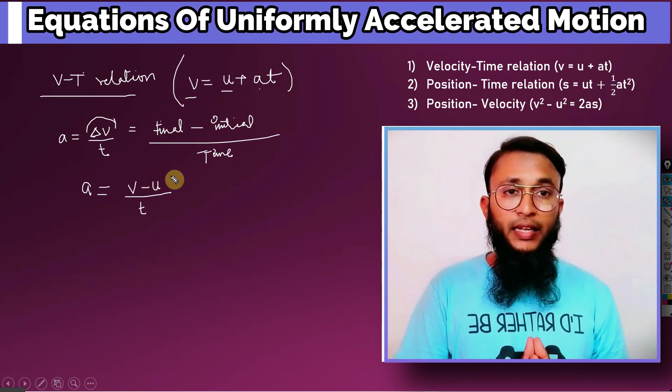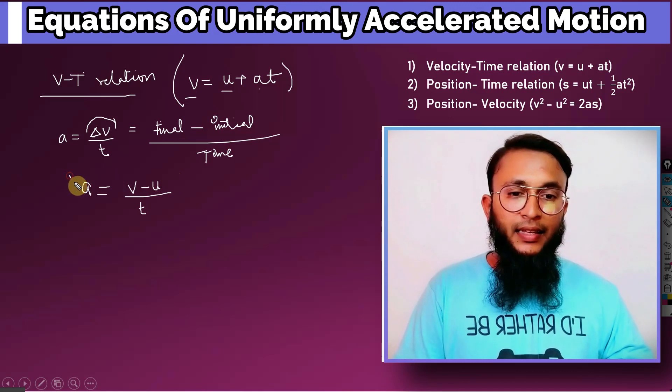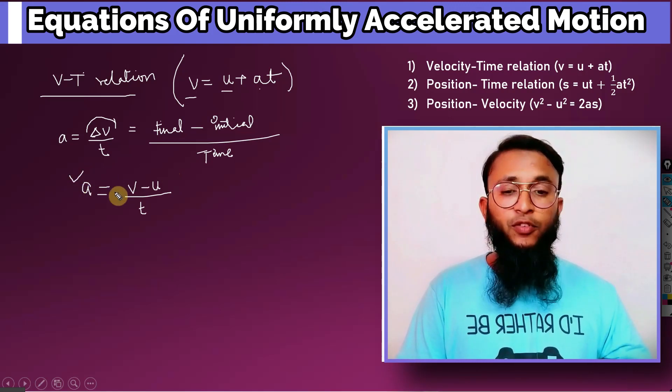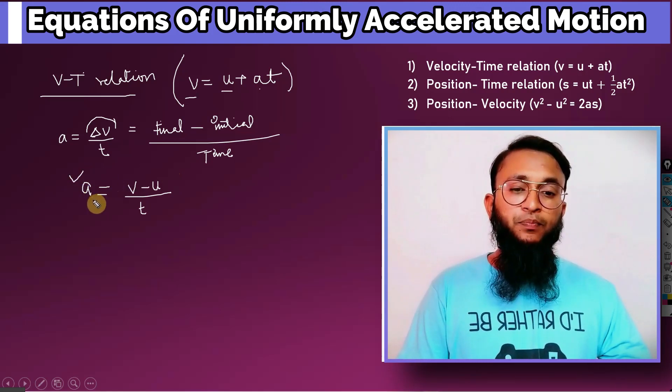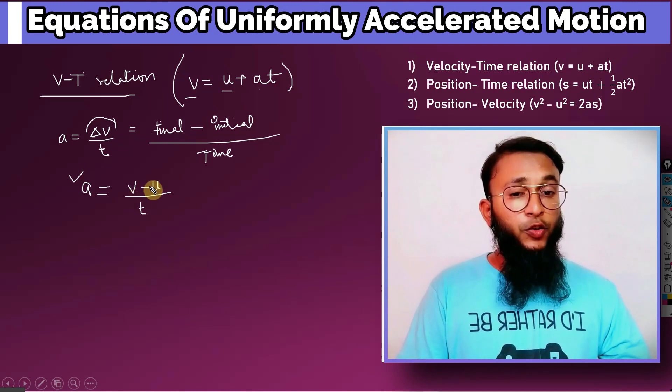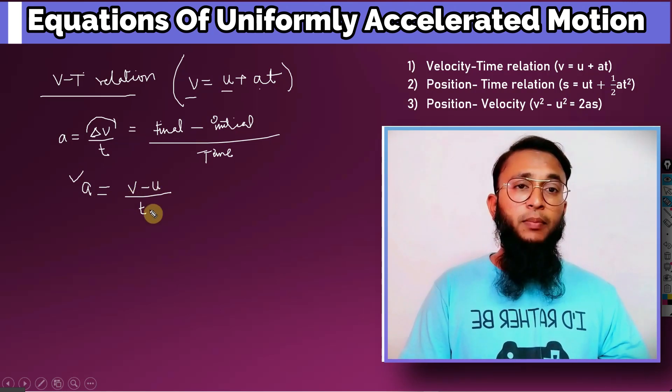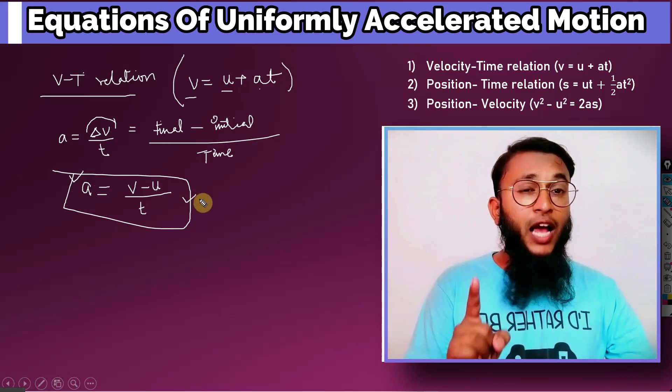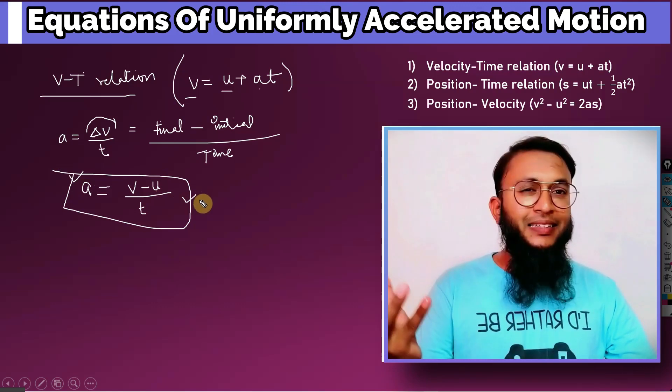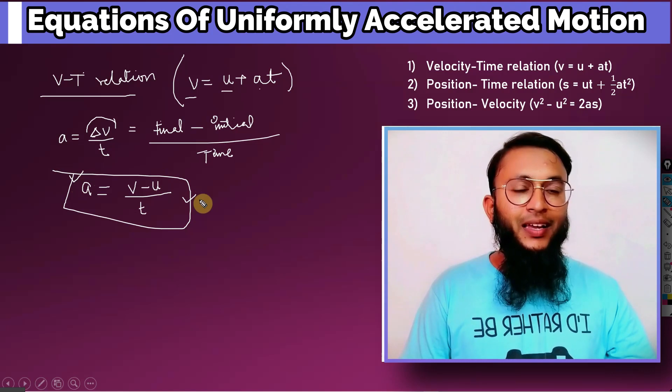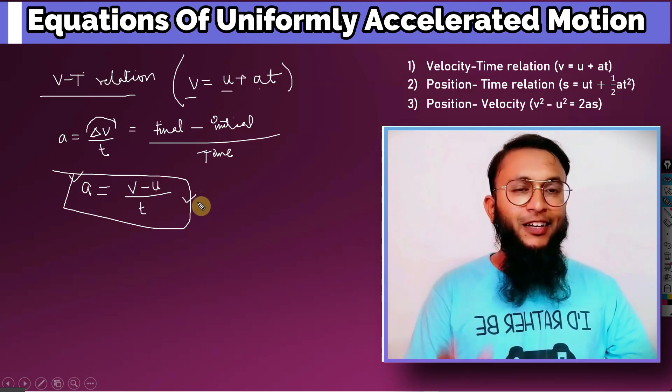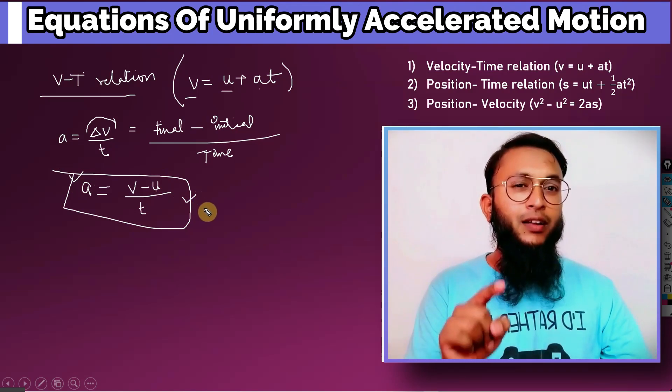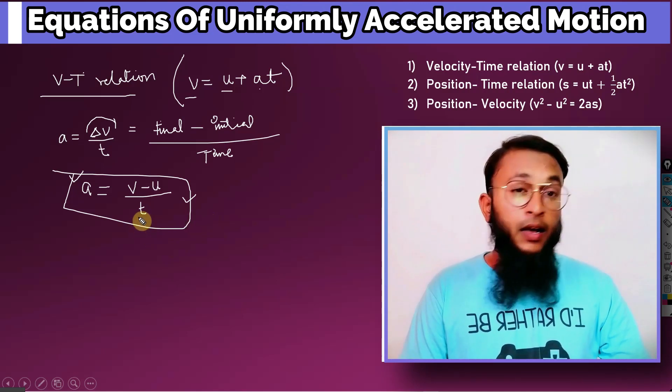So what I'll do is here v equals u plus at. If you see, a is available, v is available, u is available, and t is also available. Well if everything is available in this formula, that means we just have to shift it and we'll get the equation in the easiest way. Matlab aapko sirf shuffle karna hoga. Let's now turn to level of Hindi.